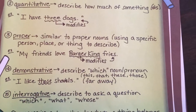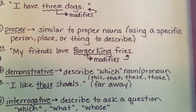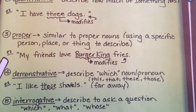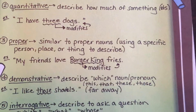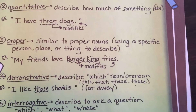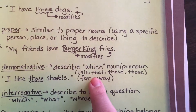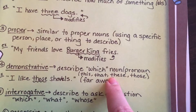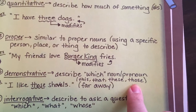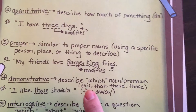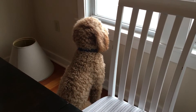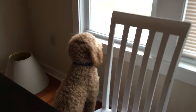Our fourth adjective is demonstrative, and these describe which noun or pronoun you're referring to. For example: this, that, these, and those. 'This' refers to something close to you — like this is my dog Ozzie looking out the window.